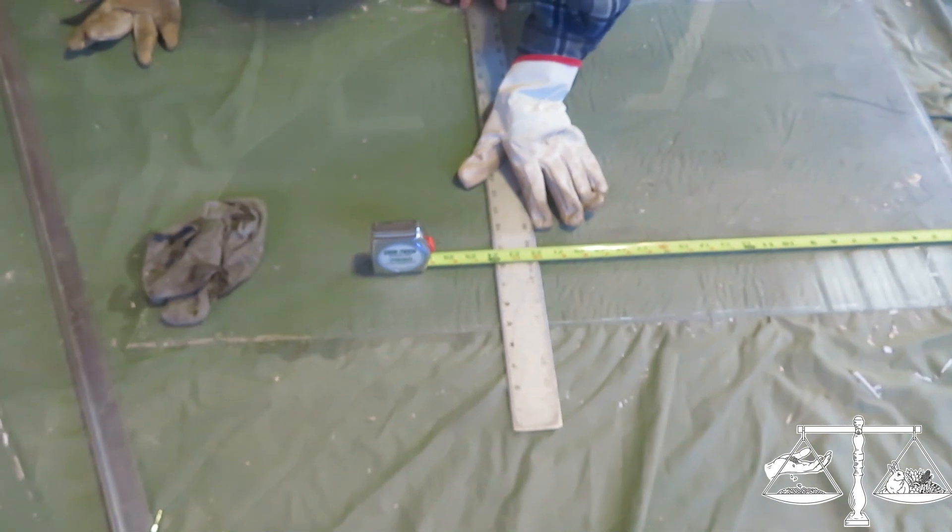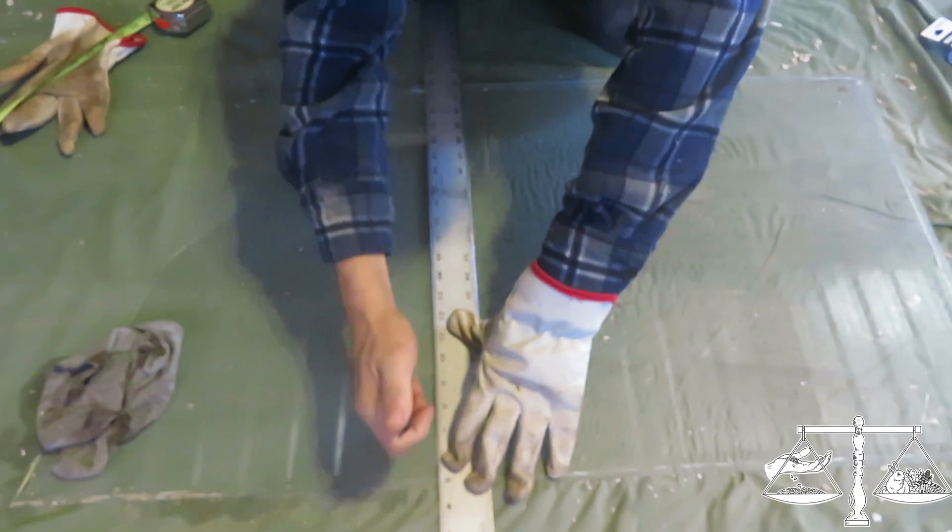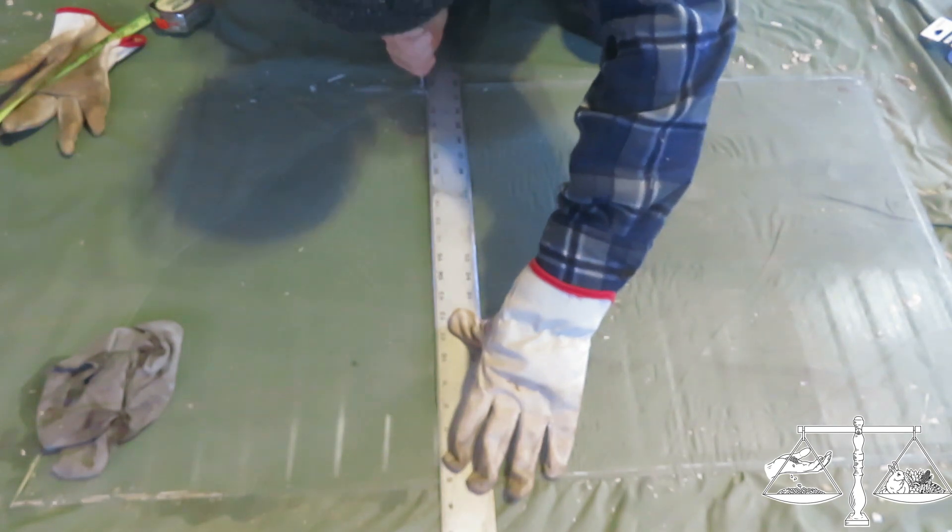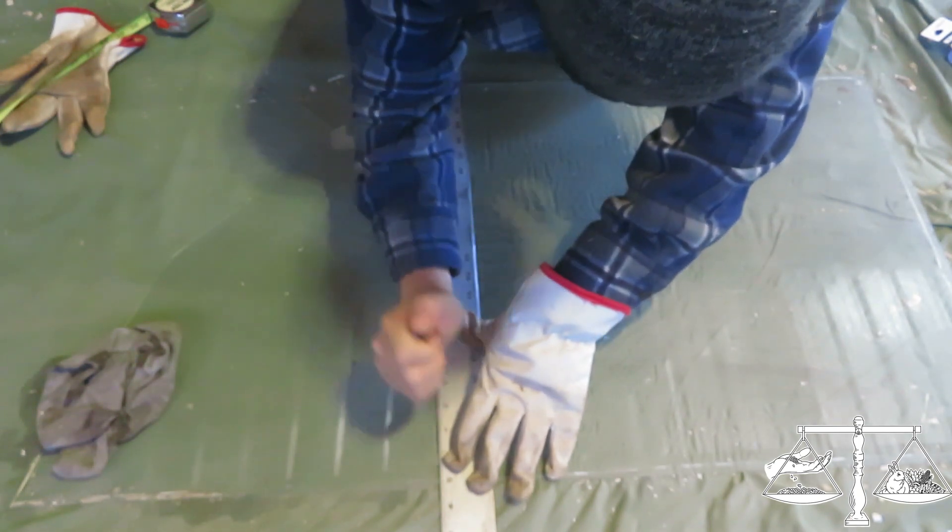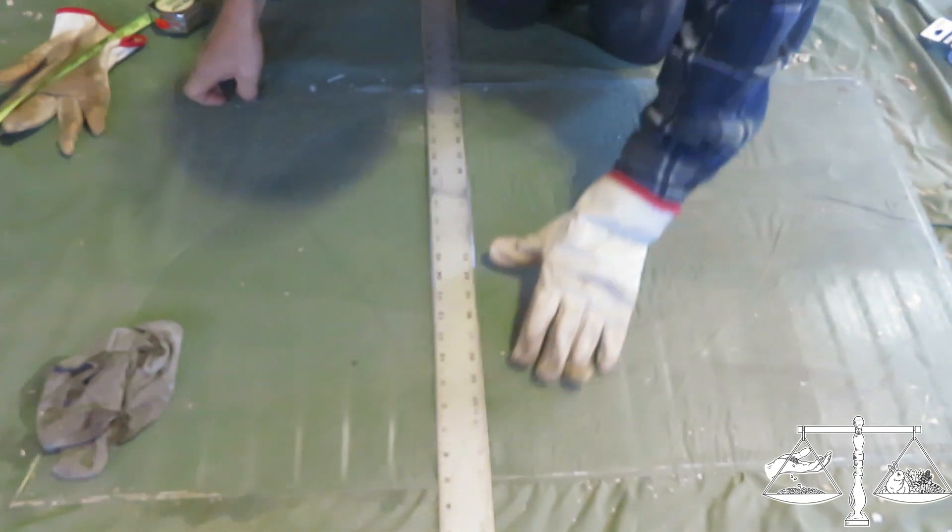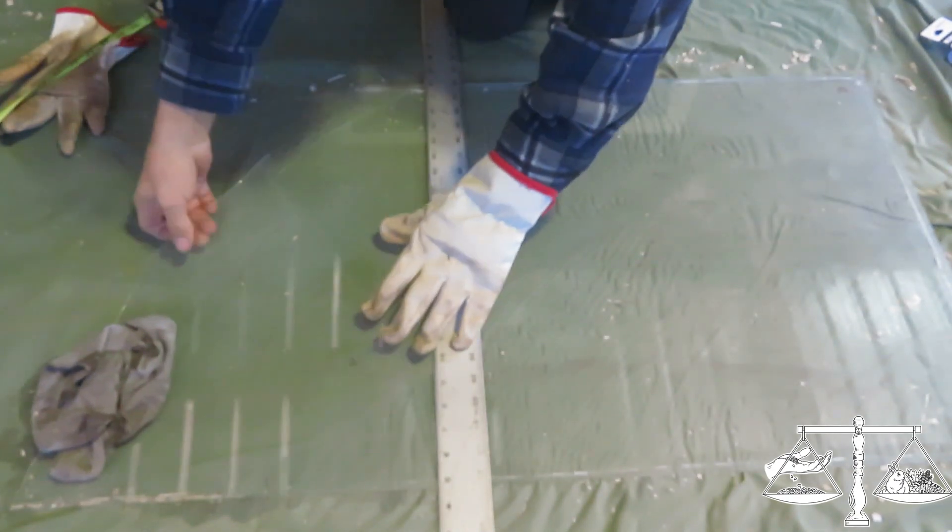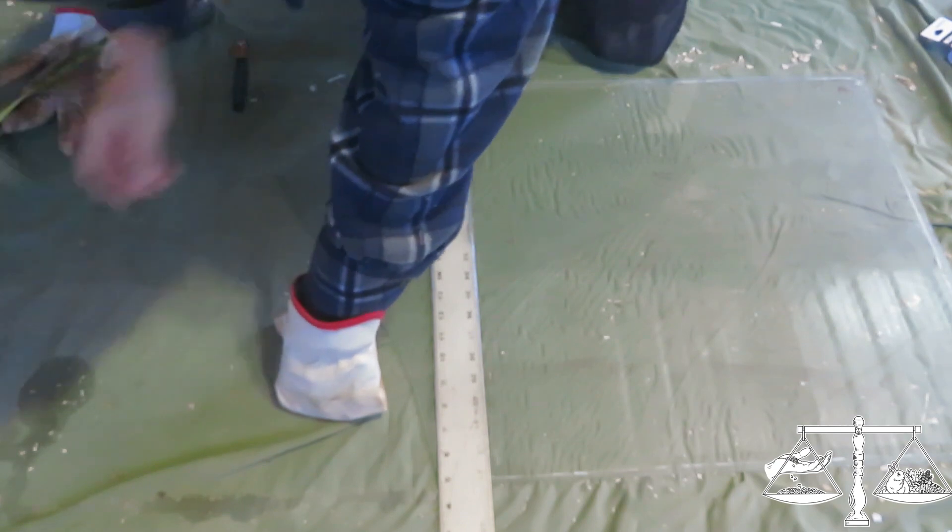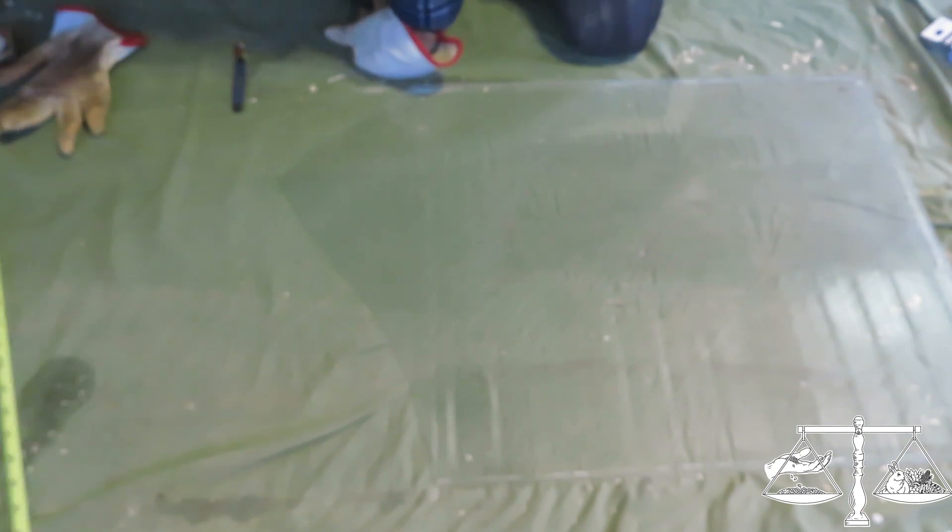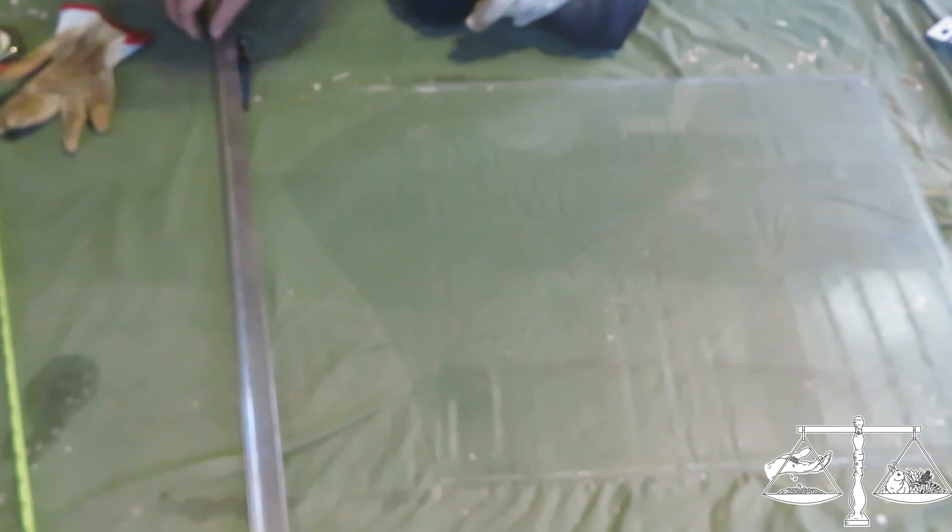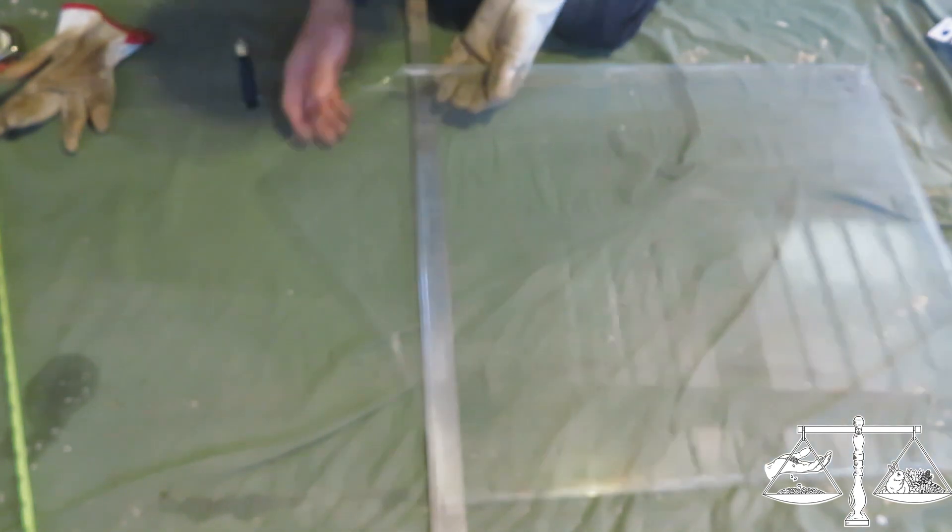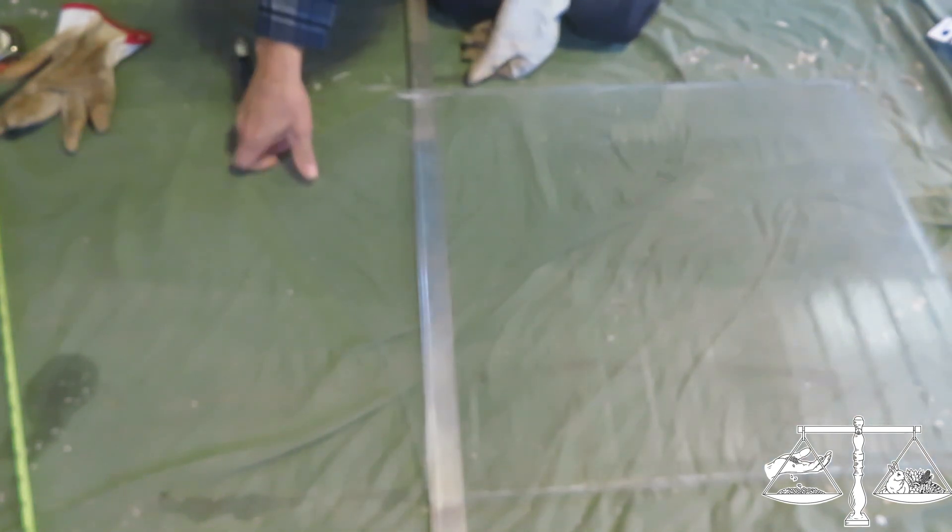We got it almost perfect. So we are hoping this is the last. All right, we successfully broke the other one. Let's see if you can on purpose break this one. Pretty weak glass. The reason why we're cutting this one at two feet instead of three feet is because it had a crack, and we have a one foot piece that we can use to make it total of three feet.